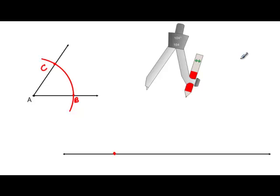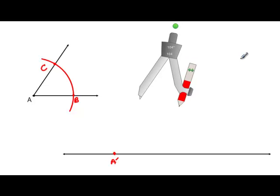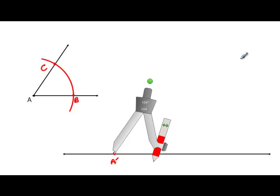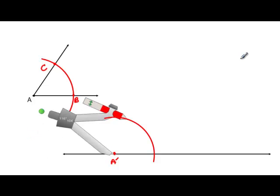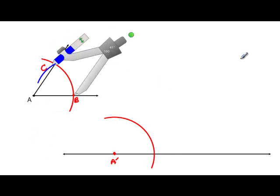And then on my working line I will create a point A', place my compass point on A', keeping the same distance as A to B, and create an arc.